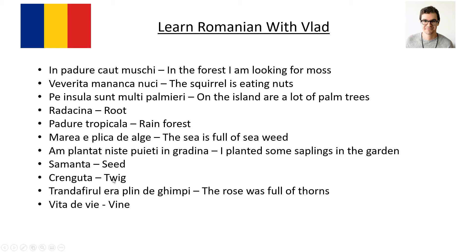Crănguță is twig — a little, little branch. And crănguță is also a girl's name. Trandafirul era plin de ghimpi — the rose was full of thorns. Trandafirul is rose, and ghimpi are thorns.